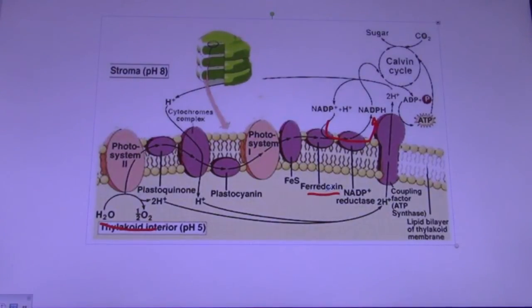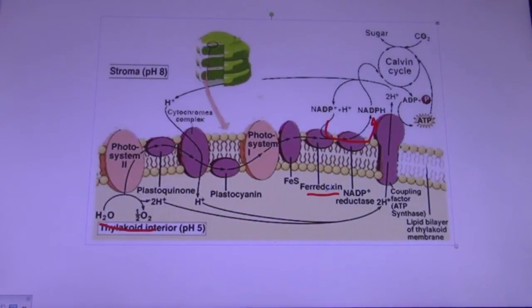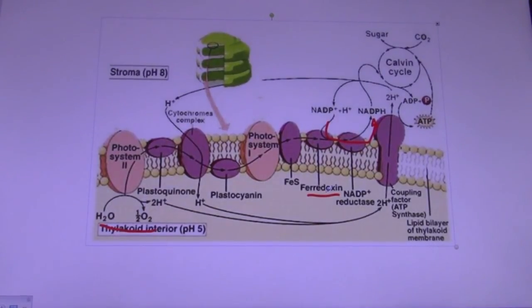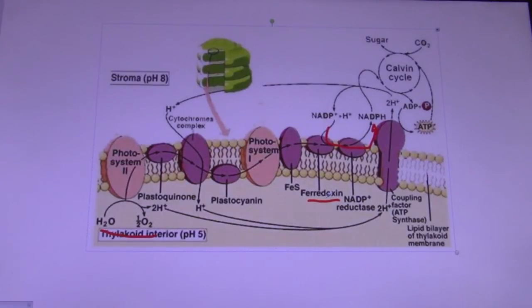The structure of ferrodoxin is specifically designed to allow for the binding of FAD cofactors and NADP+. The design of the domains and strands at the N and C terminus of ferrodoxin allows for specificity in the active site.